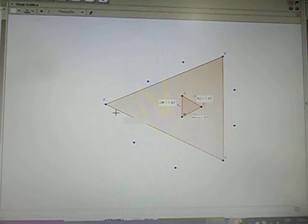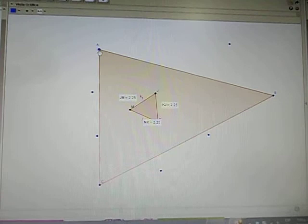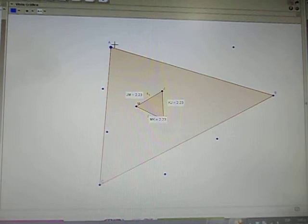To verify this theorem, I can move the vertices of the triangle and I see that the three sides of the triangle always measure the same. Then always an equilateral triangle is formed.